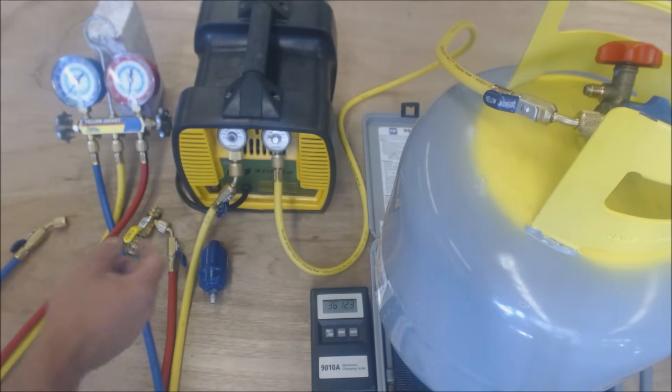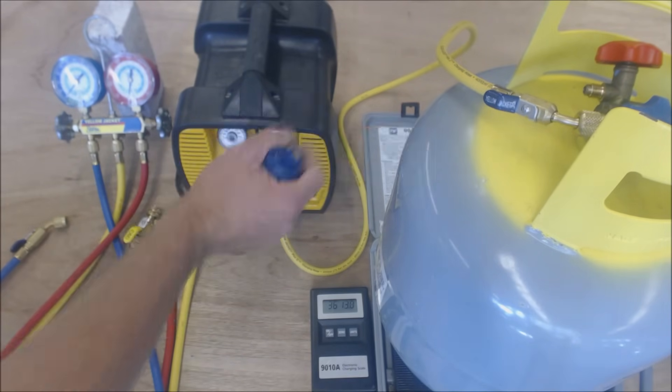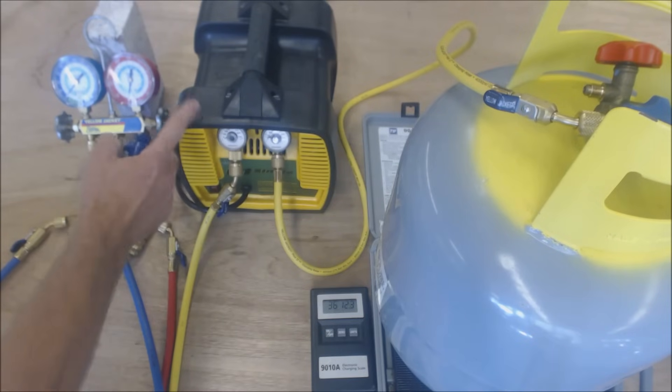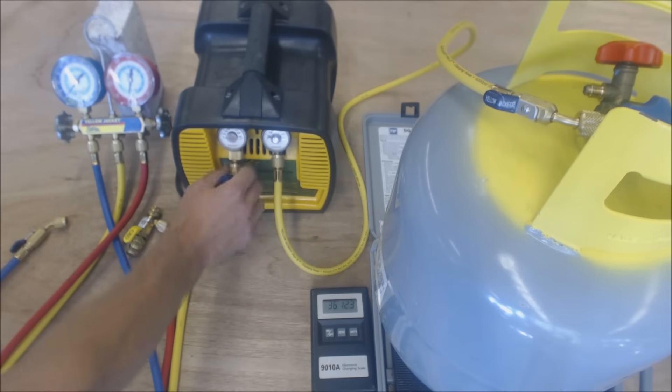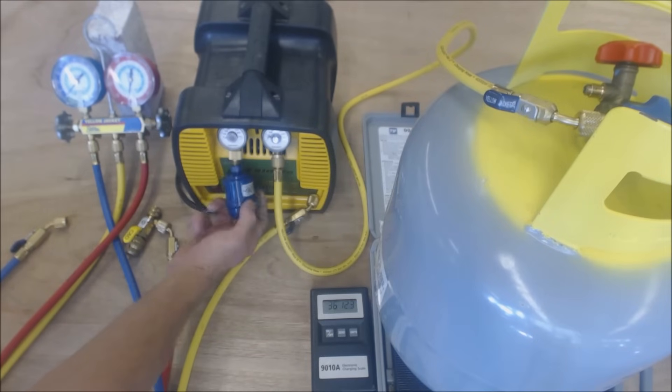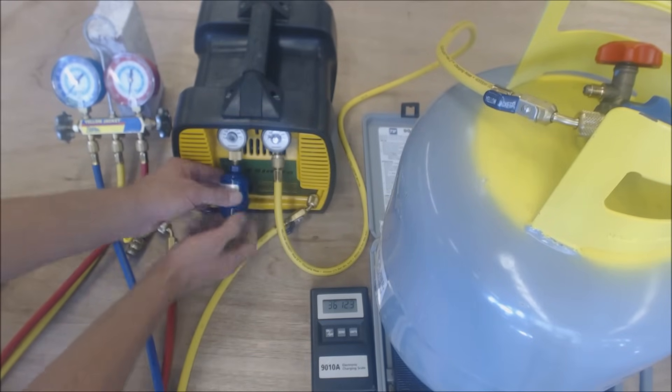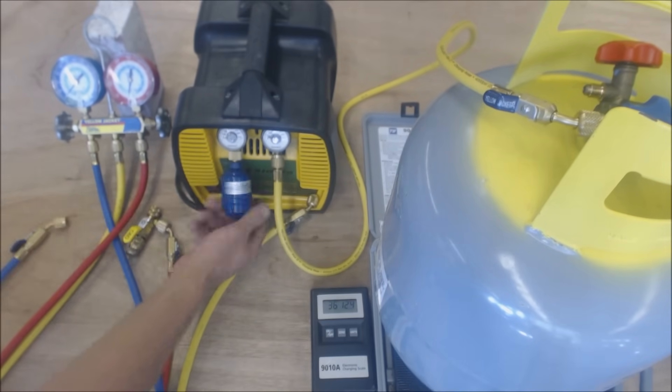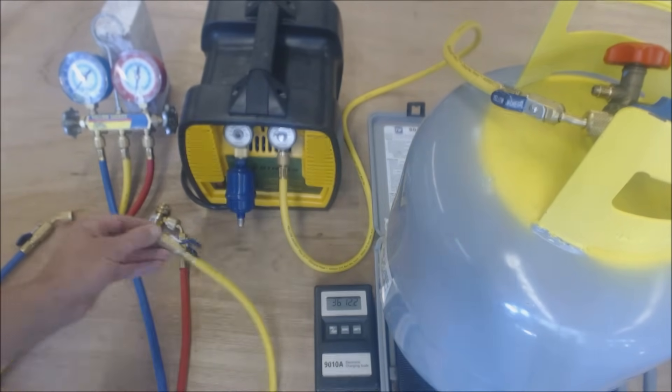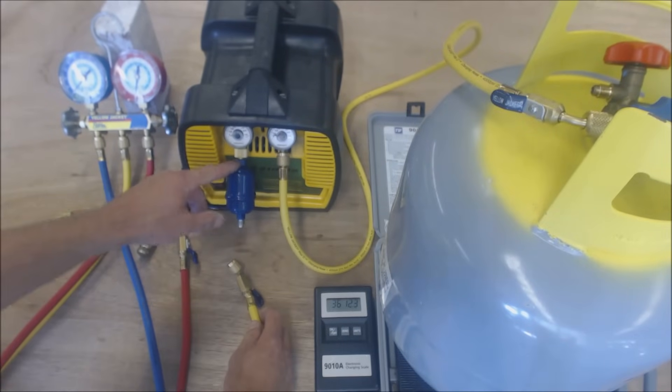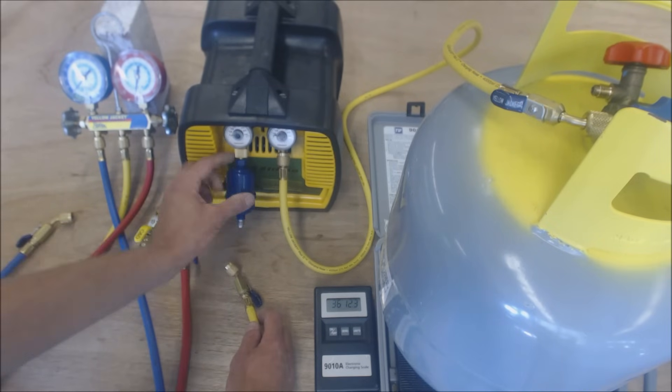Another thing is if you were planning on reusing this refrigerant in the bottle and you want to keep your recovery unit clean, you can actually go ahead and put a filter dryer in place right here. Put your filter dryer in place. If this is just a flare section right here, you're going to want to put a little bit of refrigerant oil in there beforehand—the refrigerant oil that you're dealing with.